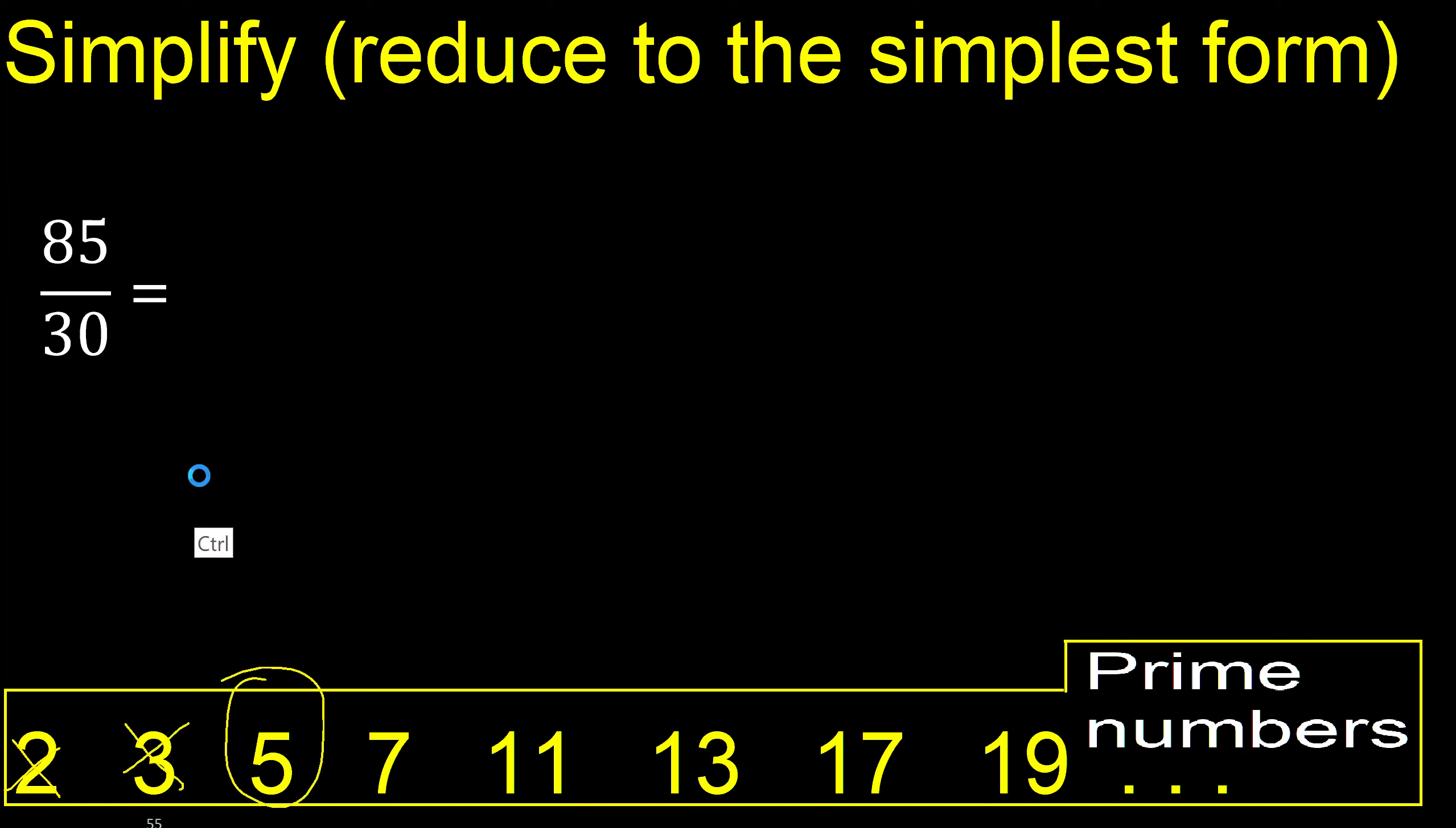Can it be divided by 5? Yes, because the last digit is 0 or 5. Therefore, divide by 5. 85 divided by 5 is 17, and 30 divided by 5 is 6. Okay, finish it because they cannot be divided by the same number.